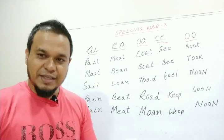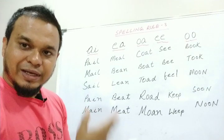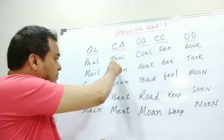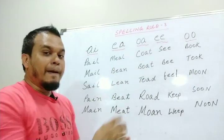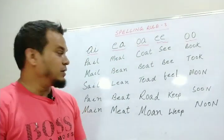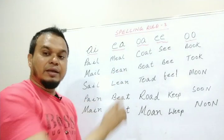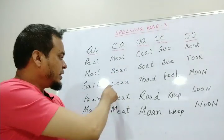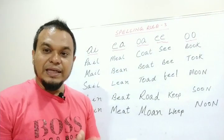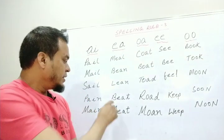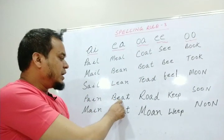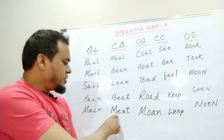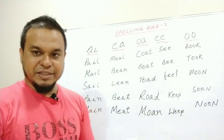Let's read the words. L, E, A, L — MEAL. B, E, A, N — BEAN. L, E, A, N — LEAN. B, E, A, T — BEAT. L, E, A, T — MEAT. These words all use the EA combination to make the long E sound.